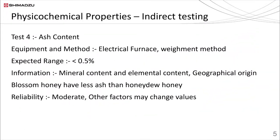Natural honey, along with sugars, contains many minerals in small quantities. These are responsible for the residual ash when honey is subjected to heating at high temperatures, generally above 500°C. The total ash content should not be more than 0.5% as per FSSAI limits. Changes in ash content and its compositional analysis can give information about geographical origin, and higher ash content can also be a sign of possible adulteration. A simple muffle furnace can be used to measure the ash content.